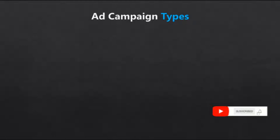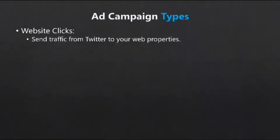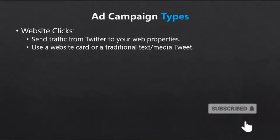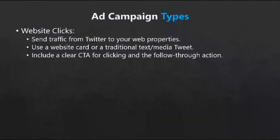One of the most common Twitter ad types is website clicks or website traffic. Use this ad type to send traffic from Twitter to your website, a squeeze page, a sales page, an e-commerce store, or a piece of content like a blog post or article. For your ad creative, you can use either a website card or other media, or even just a textual tweet. Ideally, you'll want to include a very clear call to action in your ad to encourage people to not only click, but also to follow through with certain actions on your website or page.